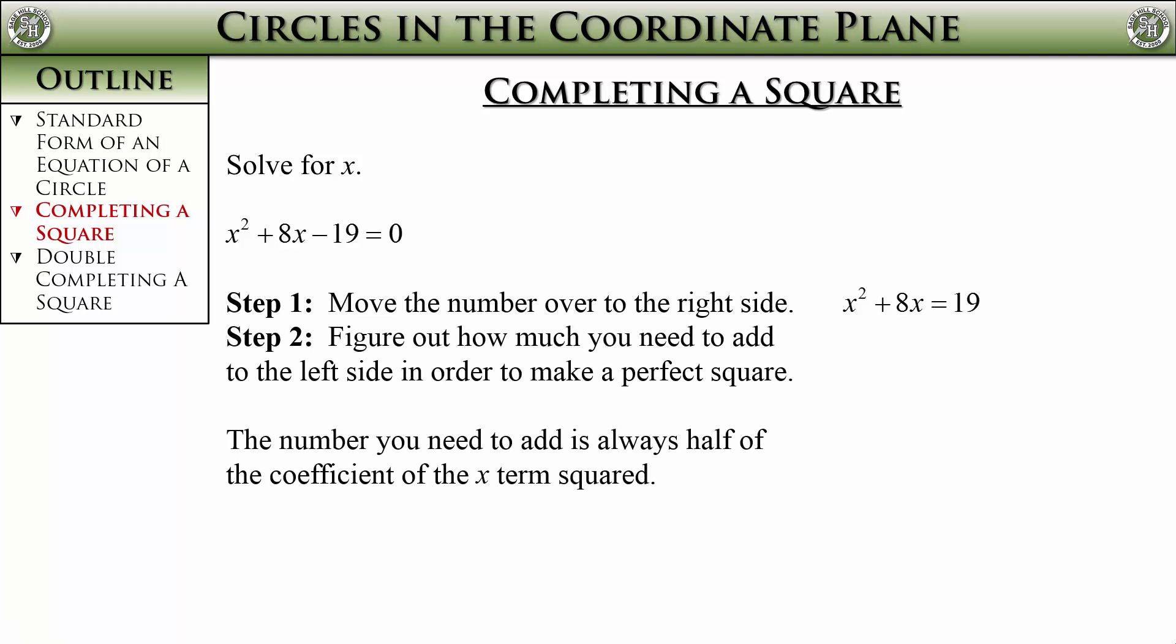Step two, you need to figure out how much you need to add to the left side in order to make a perfect square. The number you need to add is always half of the coefficient of the x term. In this case, 8 squared. So you would take half of 8 to get 4, and then square that to get 16. 16 is how much you need to add to both sides. This is what it would look like.